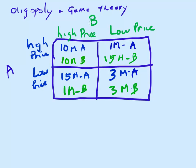Let's look at it: if B chooses a high price and I'm A, do I want to make 10 million or 15 million? I want to choose a low price and make 15 million. If B chooses a low price, do I want to make 1 million or 3 million? I want to make 3 million. Either way, I have an incentive as A to have a low price - that means I have a dominant strategy to have a low price.